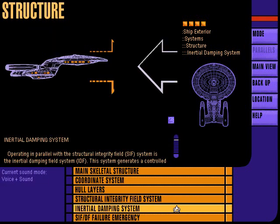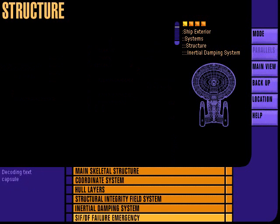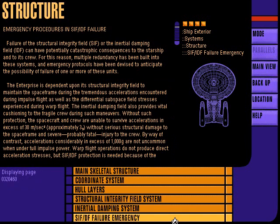The inertial damping field system generates a controlled series of variable symmetry force fields to absorb the inertial forces of space flight. Failure of any two of the five field generators requires immediate initiation of alert status.